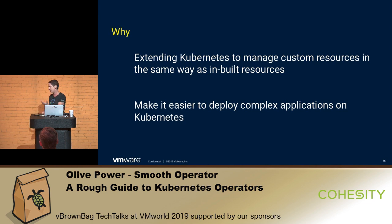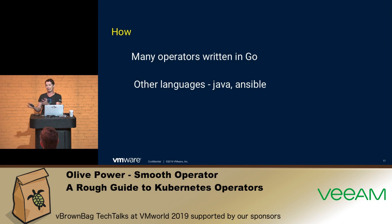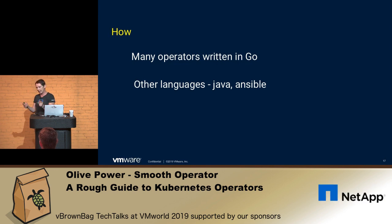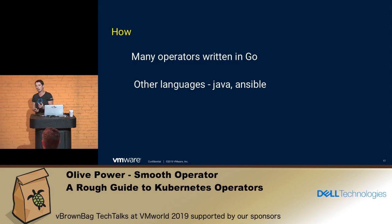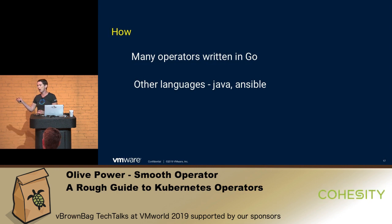You might expect the ServiceNow folks to produce an operator for that, or you craft the code yourself and package it as an operator. Most operators are written in Go, purely because Go is what Kubernetes is written in — it's nice to write your extensions in the same language. However, you can use other languages like Java or Ansible. The operator is deployed as a pod, so it's a containerized application and can actually be in any language you want since it's segregated from the underlying OS.